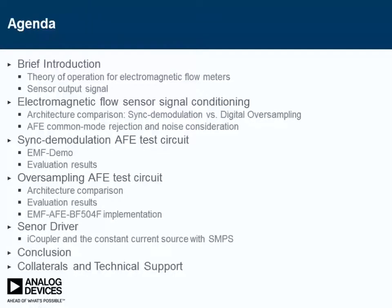The comparison between the synchronous demodulation architecture versus the digital oversampling architecture. We will discuss the considerations about the common mode rejection ratio and noise for the analog front end circuits. We have some evaluation results from the prototypes of the analog synchronous demodulation architecture. Then I will present the digital oversampling analog front end test circuits, talk about its advantage in space, cost, power, and performance, supported by evaluation results. We will also look at the sensor drive circuit and conclude the webcast.